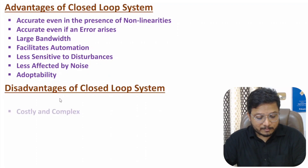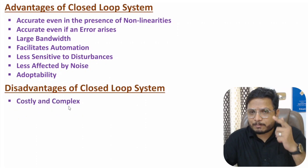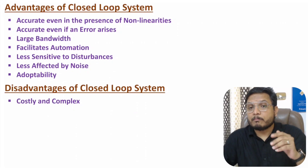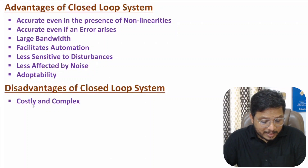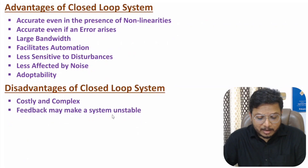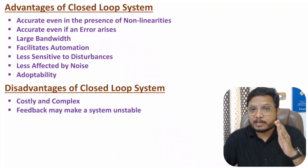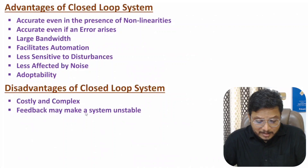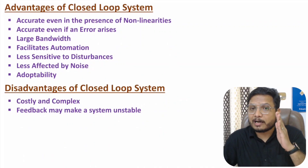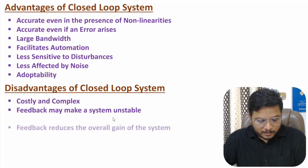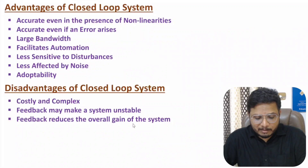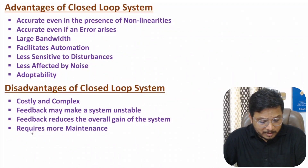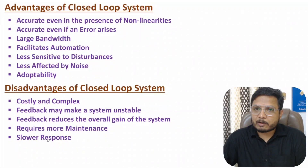Now let me discuss about disadvantages. Closed loop control systems are costly and complex. With open loop control system we have minimum blocks, but with closed loop we have feedback as well as an adder-subtractor element, adding complexity and cost. Feedback may also make the system unstable — in future videos I'll explain how feedback can cause instability. Feedback also reduces the overall gain of the system, which I'll cover in future videos. Finally, closed loop systems require more maintenance because of their complexity, and the response of the system is slower.